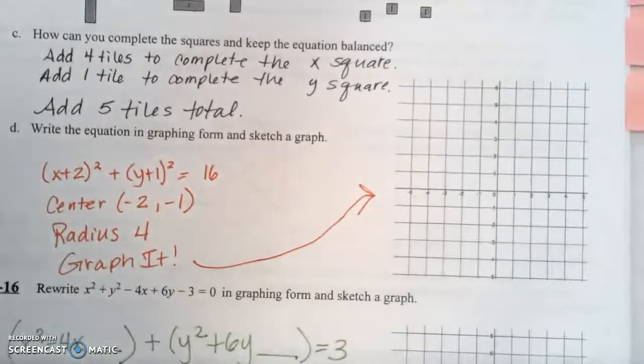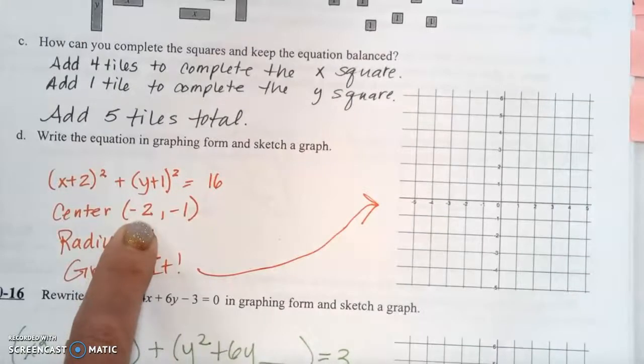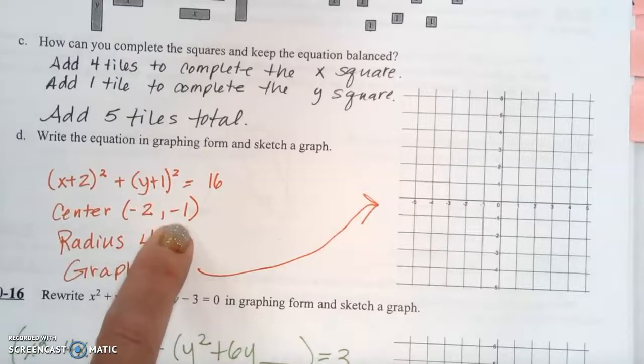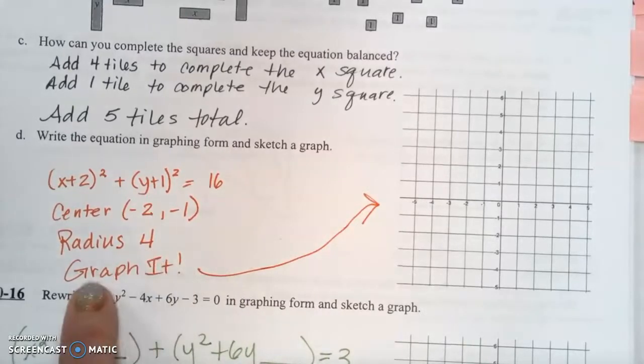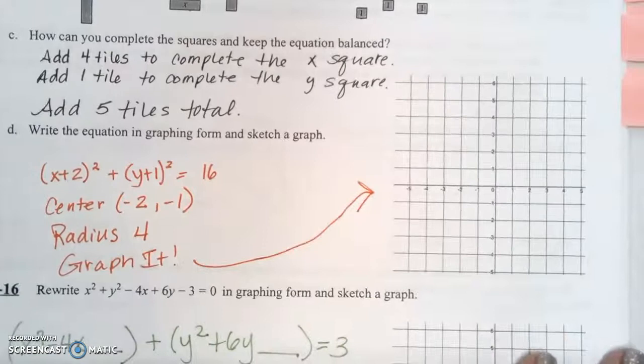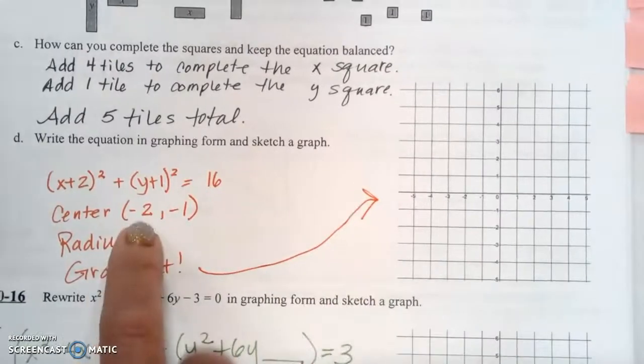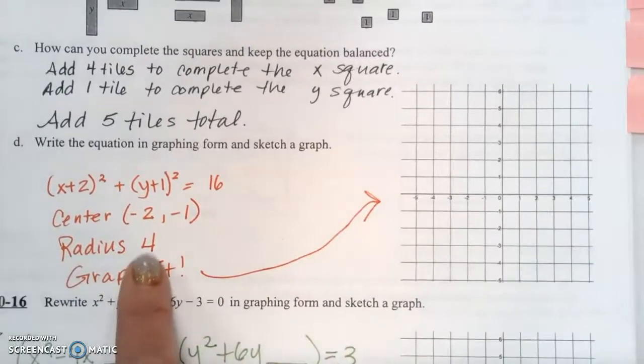Now it's in what we call graphing form. So we can take the opposite of this number to get the x of our center. Take the opposite of this number to get the y of our center. And then we're going to find the radius from our 16, which is the square root of 4. And then you're going to graph it on this coordinate plane right here. So find the center, plot it, and then once you've found the center, from that center, you're going to go 4 units in each direction.